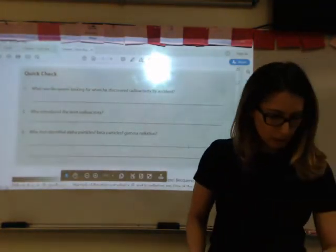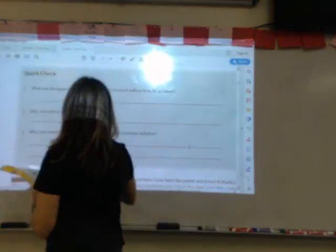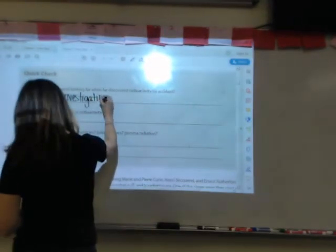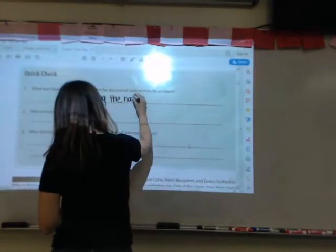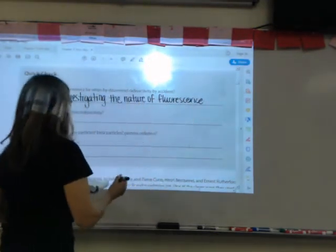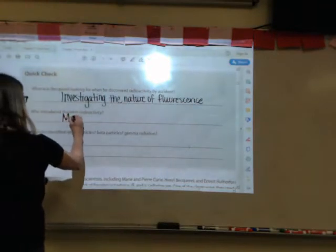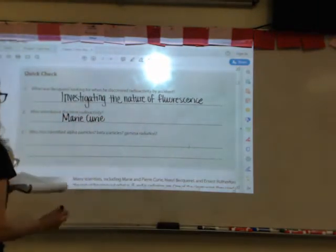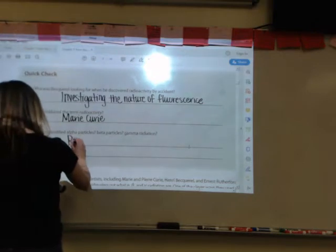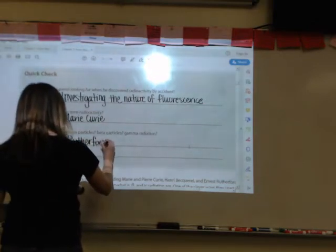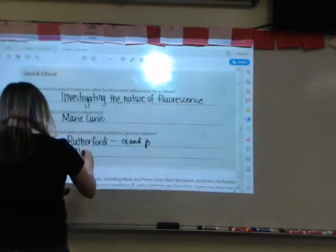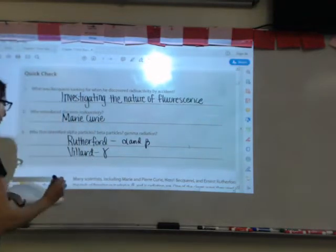Let's look at the quick check here. What was Bacquerel looking for when he discovered radioactivity by accident? He was investigating the nature of fluorescence. Number two, who introduced the term radioactivity? That was Marie Curie. Number three, who first identified alpha particles, beta particles and gamma radiation? Rutherford was the one that identified alpha and beta particles, and then Villard was the one that identified gamma rays.